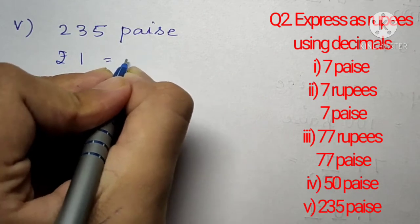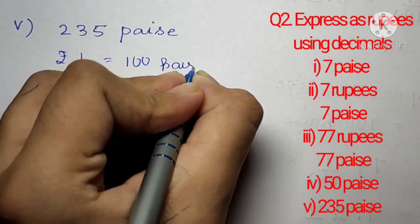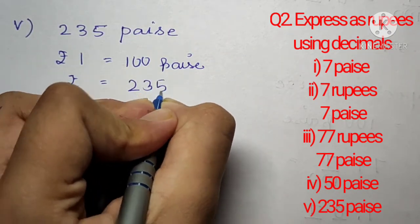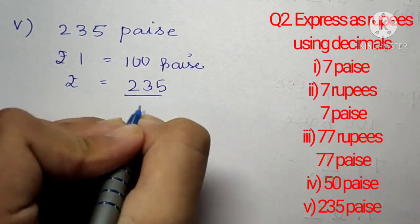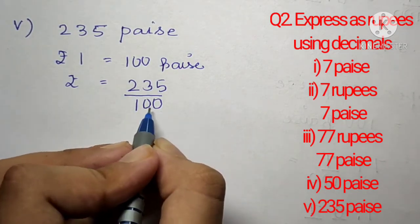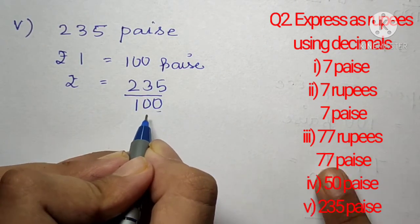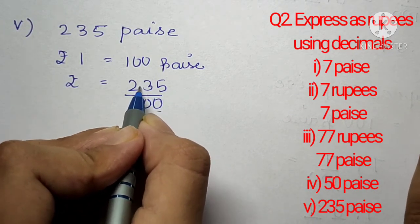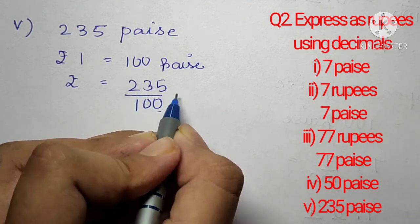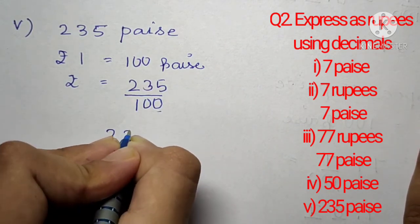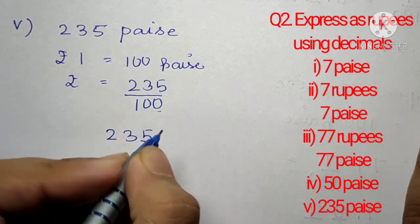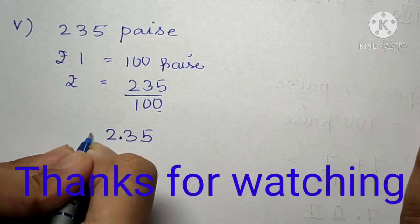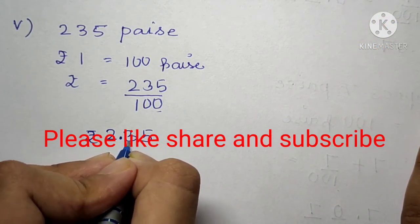Question number 2, part 5: 235 paise. Rupees 1 equals 100 paise. To convert, we write 235 divided by 100. Since 100 has two zeros, the decimal point is placed two positions from the last digit. We have digits 2, 3, and 5 — placing the decimal two from the right gives us rupees 2.35.